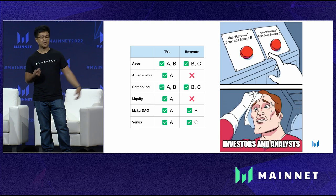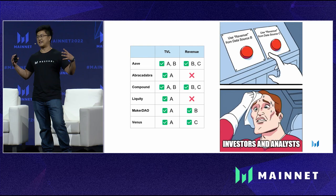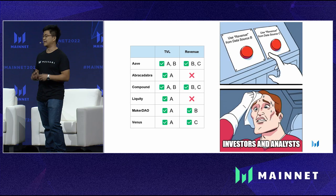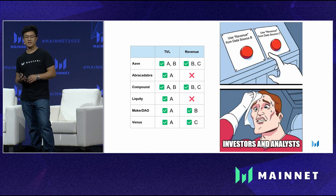There are also other issues. Looking at TVL and revenue, there are two different data sources she can use. For TVL, it probably makes sense to use data source A since it contains all the protocols she's interested in. But revenue is more complicated — in some instances she has both data source B and C for protocols like Aave and Compound, and in other instances only one data source supports a protocol, like MakerDAO or Venus.